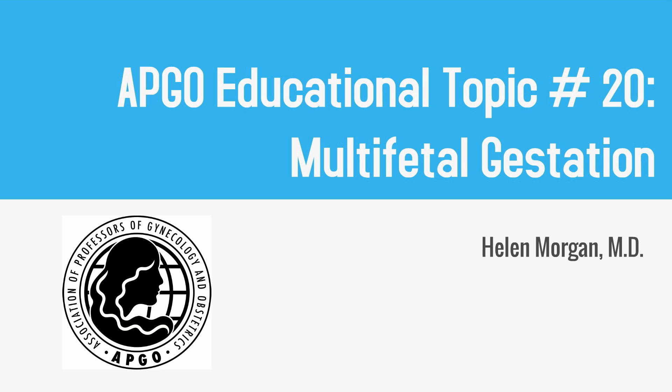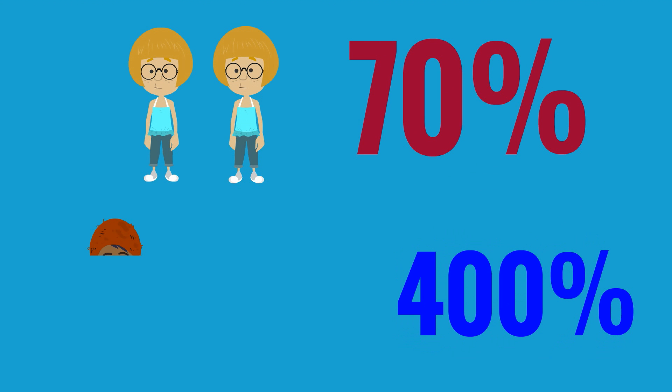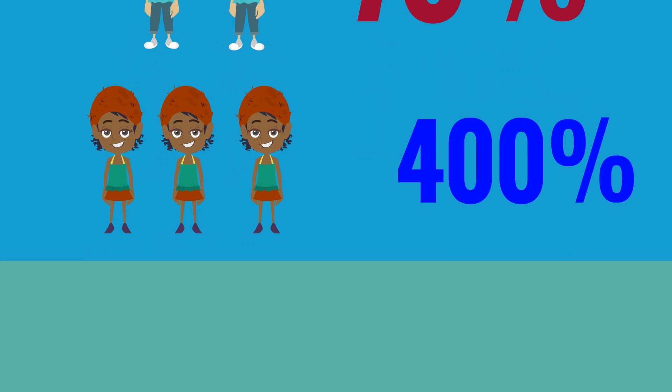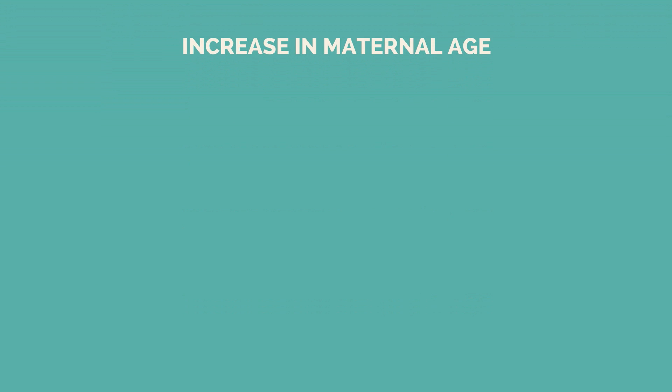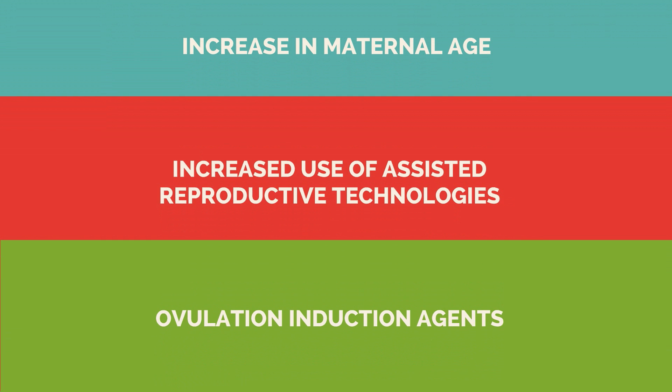APCO Educational Topic Number 20, Multifetal Gestation. Since 1980, there has been a 70% increase in the frequency of twins and a 400% increase in triplet and higher order births. These rates are rising as a result of an increase in maternal age and the increased use of assisted reproductive technologies and ovulation induction agents.